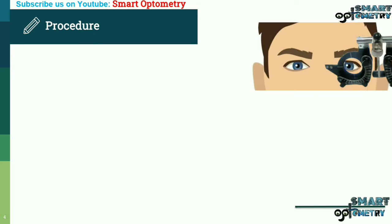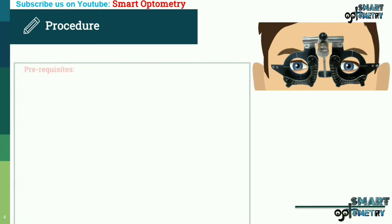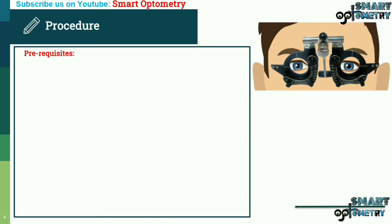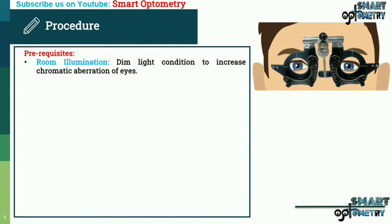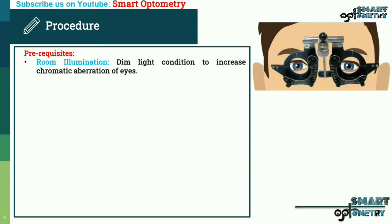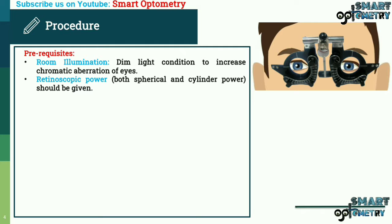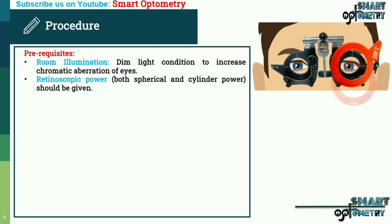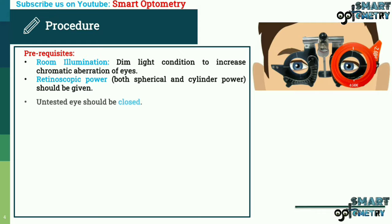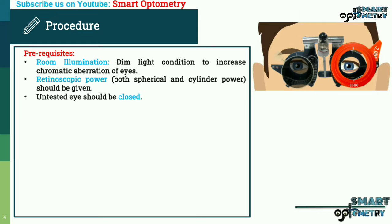Now the procedure of the duochrome test. There are three requisites. First, room illumination: room illumination should be in dim light conditions to increase chromatic aberration of the eye. Second, retinoscopic power — both spherical and cylindrical — should be given. Third, the untested eye should be closed.